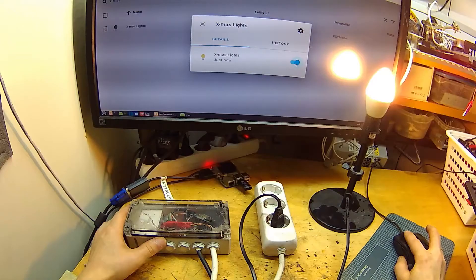So let's use ESP Home to create a Wi-Fi switch for controlling a light and add that light to Home Assistant.